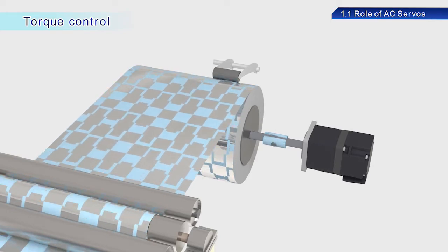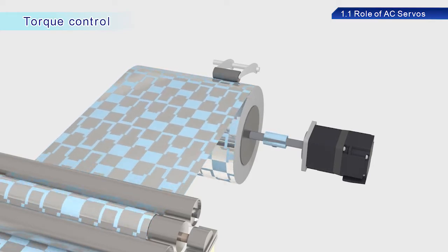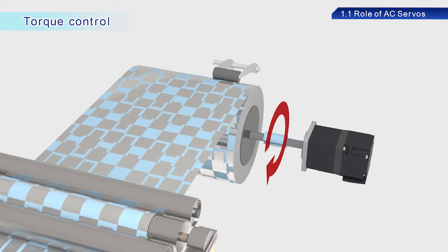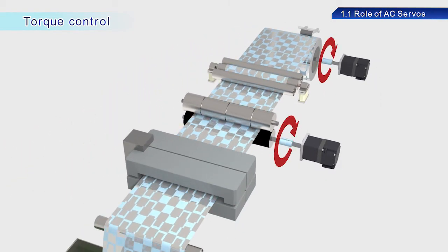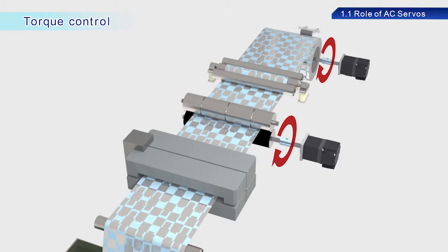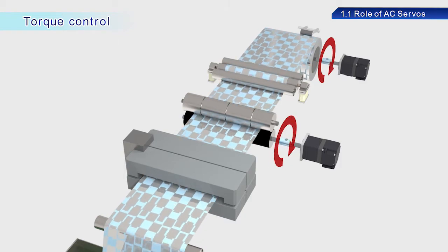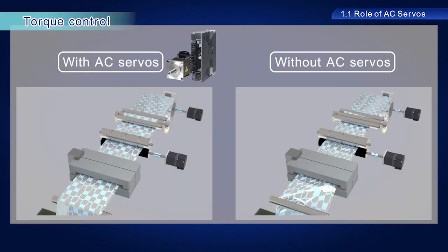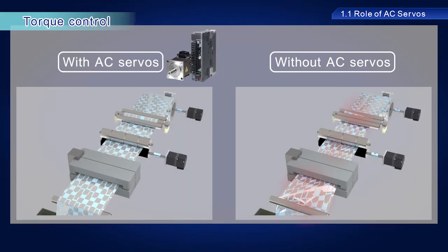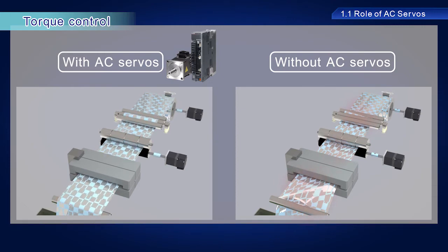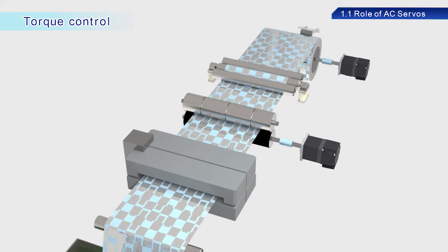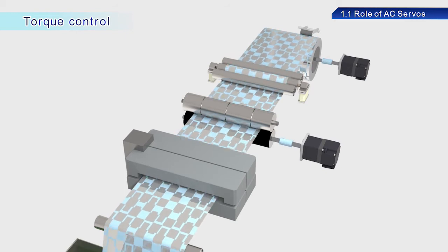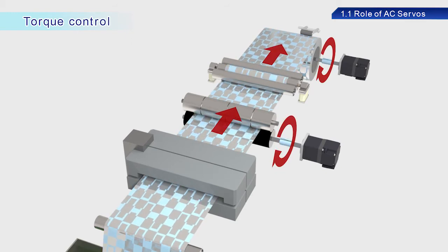Finally, let's cover torque control. Torque is the force used to rotate shafts. Torque control is used, for example, with industrial printers. Wrinkles on the print surface on such printers can cause the printing process to fail. AC servo torque control ensures that paper is pulled and stretched evenly, so that there are no wrinkles or sagging on the print surface.